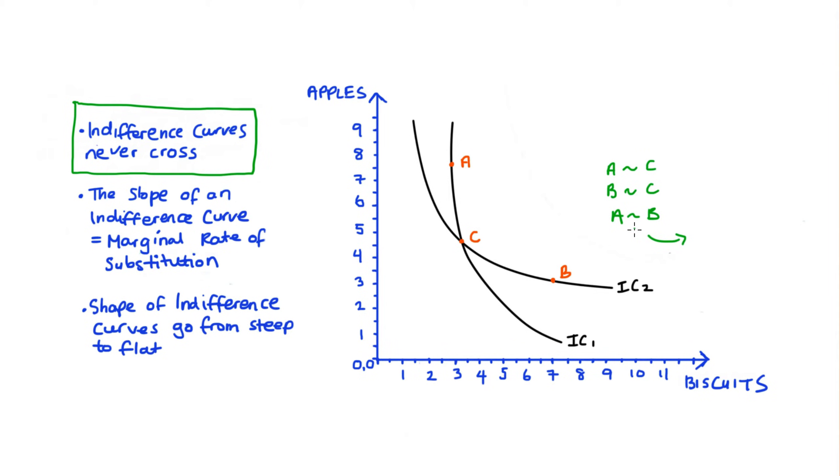Yet this cannot be correct, because we know that A and B lie on different indifference curves, which means that by definition, they correspond to different levels of satisfaction. And because of that, we would never be indifferent between them. Now to remove this contradiction, we must not ever allow indifference curves to cross.